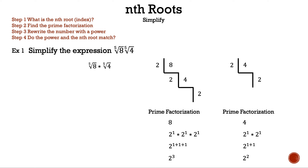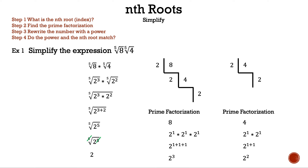Now let's rearrange eight and four as two cubed and two squared. So now we have the fifth root of two cubed times the fifth root of two squared. Using properties of roots, we can combine them since both have the same index, and add the exponents since both have the same base — three plus two is five. We can cancel the power and the index since both are the same, and only the two remains. That is example one.